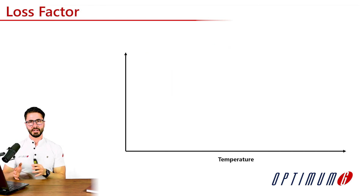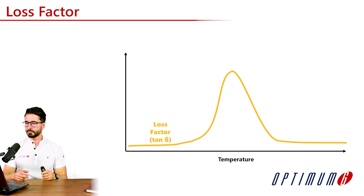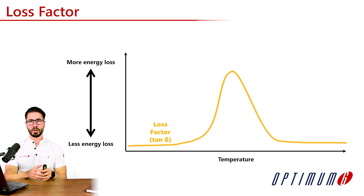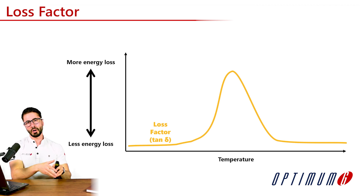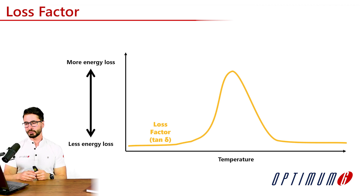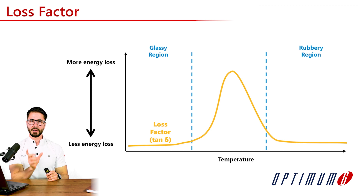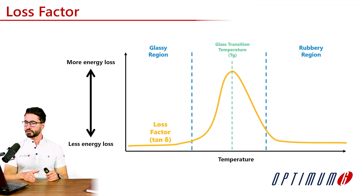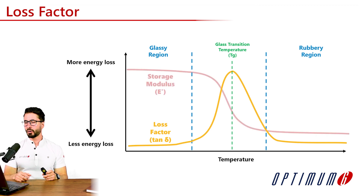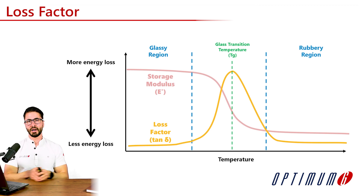The second property we'll study is the loss factor, also called tan delta. The loss factor is a measure of the rubber's viscous behavior. A higher number will indicate more energy loss, while a lower number will indicate less energy loss. In the same way, we'll have the glassy region and the rubbery region — for this particular property, both of them will have a low energy loss characteristic, and we have the middle segment that has very high energy loss characteristics. The peak of the energy loss is actually what characterizes the glass transition temperature of this material. Now we can see both of these properties together — they will both dictate a lot of what happens with the rubber when sliding over the asphalt.